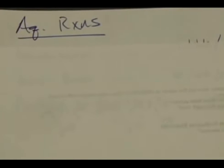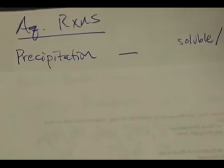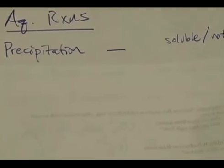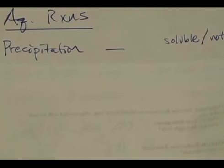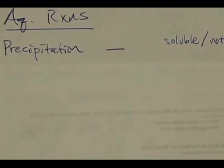So far in this chapter, in aqueous reactions, we've looked at two different types of reactions. The first one were called precipitation reactions. In these kind of reactions, we asked whether the product was soluble or not. Soluble or not was told to us by the solubility rules. And knowing that soluble ionic salts were one of the strong electrolytes.